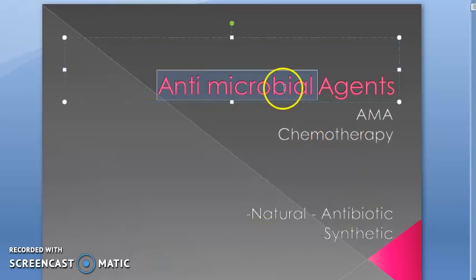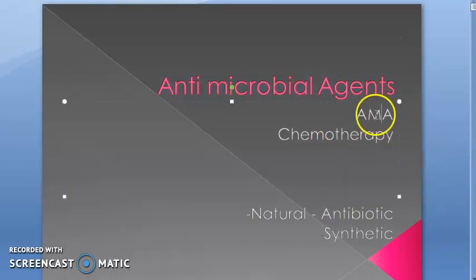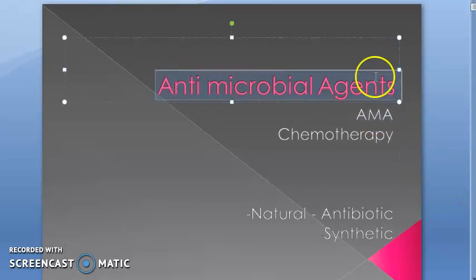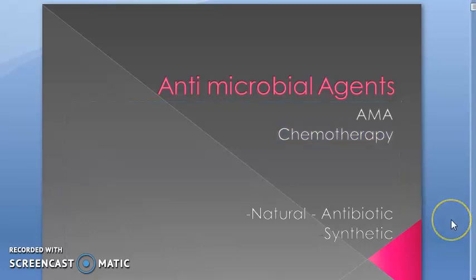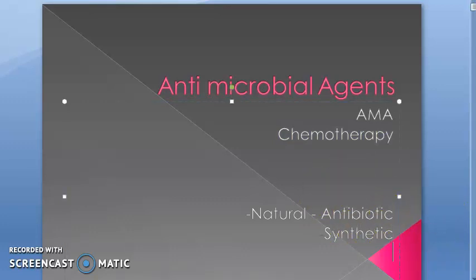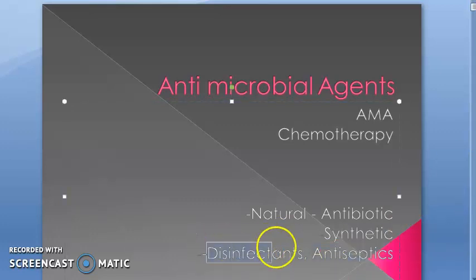In this video we want to study antimicrobial agents, also called AMA. It can be shortened to AMA. It is actually called chemotherapy because in chemotherapy you're trying to destroy some cells — cancerous cells — and here you're trying to destroy microorganism cells, so it is included under chemotherapy. Under antimicrobial agents you can have antibiotics, which are natural, and synthetic antimicrobial agents. Disinfectants and antiseptics are also antimicrobial, however here we are not concerned about those.